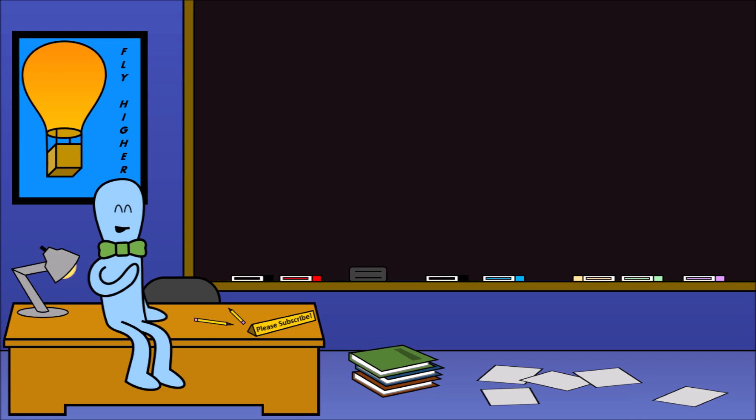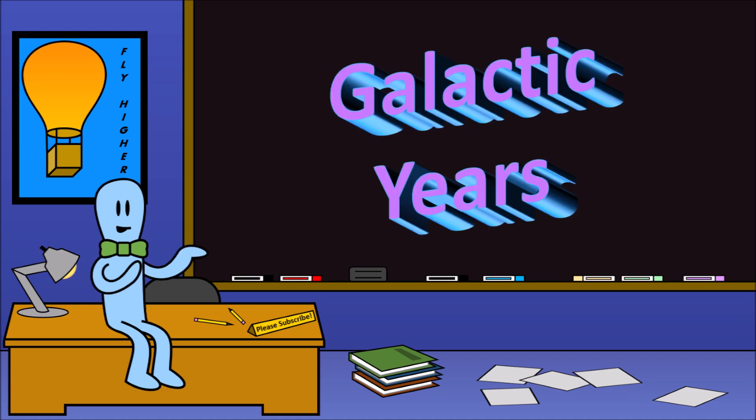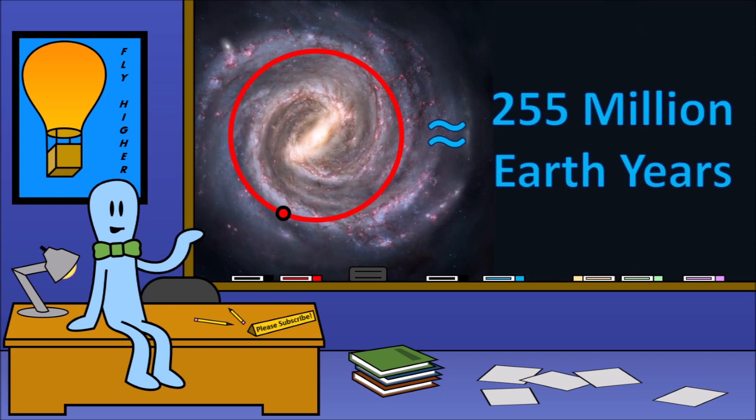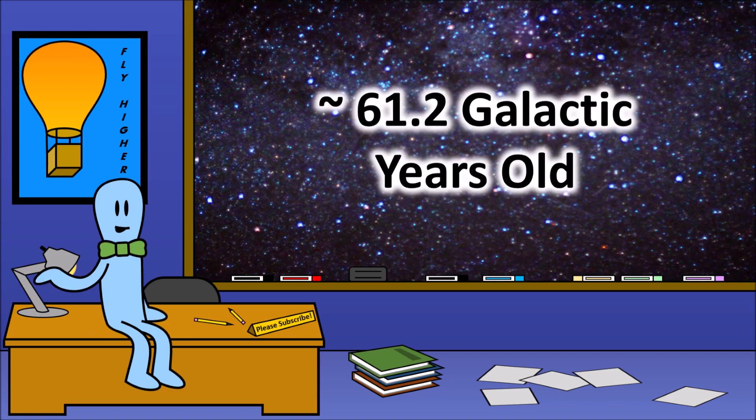I think a good way to demonstrate this is with my new favorite unit, galactic years. One galactic year is the amount of time it takes for our solar system to orbit once around the Milky Way galaxy. Approximately 225 million earth years. The universe itself is about 61.2 galactic years old.